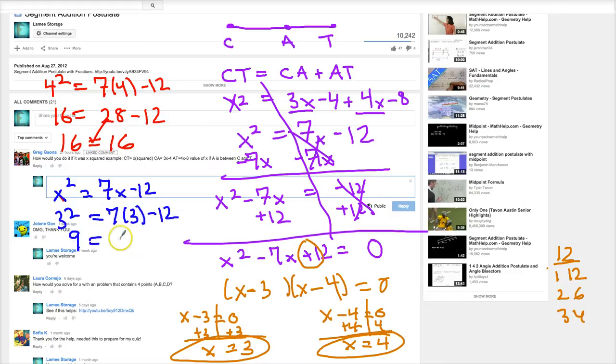So 9 here. 7 times 3 is 21. 21 minus 12 is 9. So 9 equals 9. So in this case, you have 2 answers.